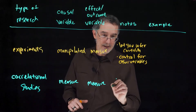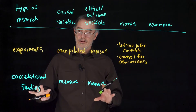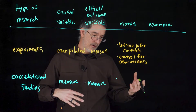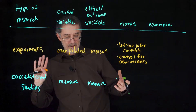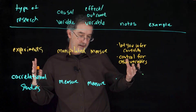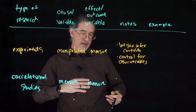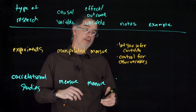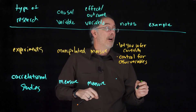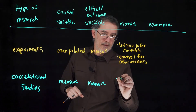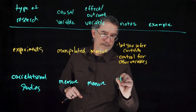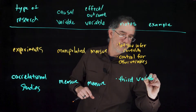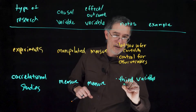With correlational studies, because you are not controlling for those other variables, a lot of things could differ — things that could lead somebody to drink more coffee but also be less tired. For example, if you are up really late the night before, that might make you drink more coffee but also be more tired. That is a third variable that could influence both.